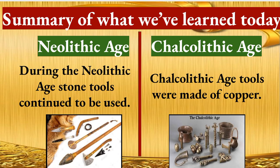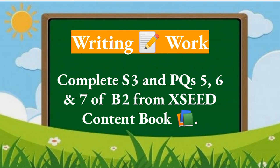Summary of what we learned today: we learned about the Neolithic Age and the Chalcolithic Age. In the Neolithic Age, stone tools such as the scrapper and scythe were used. In the Chalcolithic Age, tools were made of copper. Your today's writing work is to complete S3 and PQs 5, 6, and 7 of Block 2 from the Exceed Content Book. Write in good handwriting and make sure your spellings are correct with no mistakes.